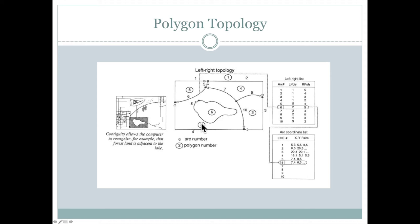So this arc number six, if we follow it over here, has a left polygon equal to two and a right polygon equal to five. That's important because now it understands what polygons are on either side of it.